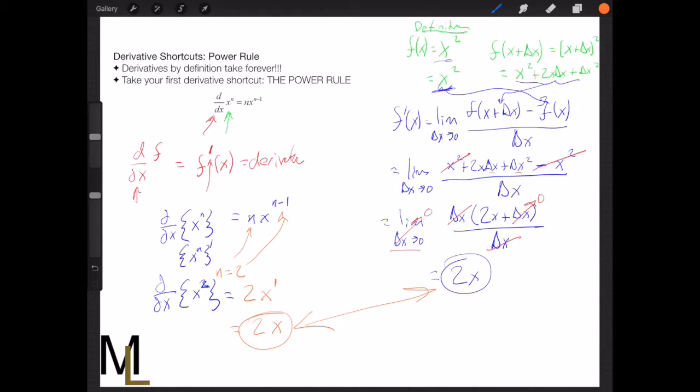So we've just shown through one example that this is valid for any polynomial. So that means any function that is x to the n.